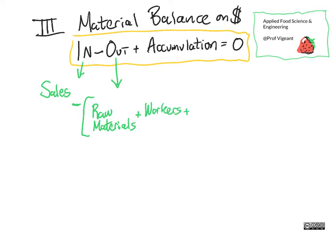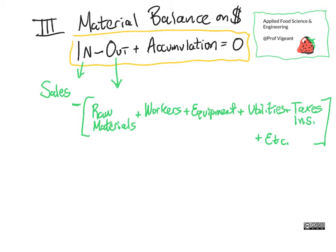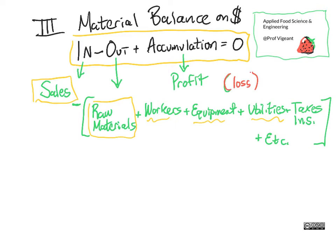Our costs include raw materials, paying the workers, equipment, utilities, taxes and insurance, and so on. In our initial consideration, we're going to pay attention to sales and raw materials, and we will acknowledge that there are workers, equipment, and utilities but we're not going to work those in quite yet. And then what is accumulation in this case? It's profit — it's what's left. If 'out' turns out to be a bigger number than 'in,' because you can have negative accumulation, that's a loss.